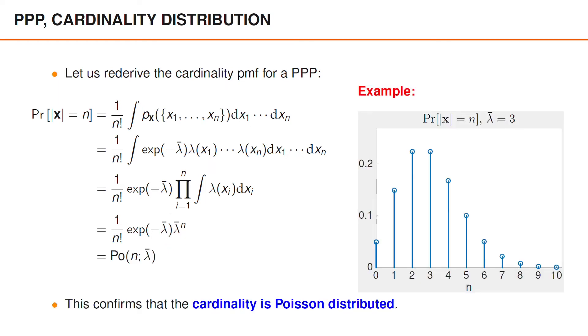We can identify the expression that we have arrived at as the PMF of a Poisson distributed random variable with mean lambda bar. This confirms that the cardinality of a Poisson point process is Poisson distributed, and we have illustrated this probability mass function for lambda bar equal 3 in the figure to the right.